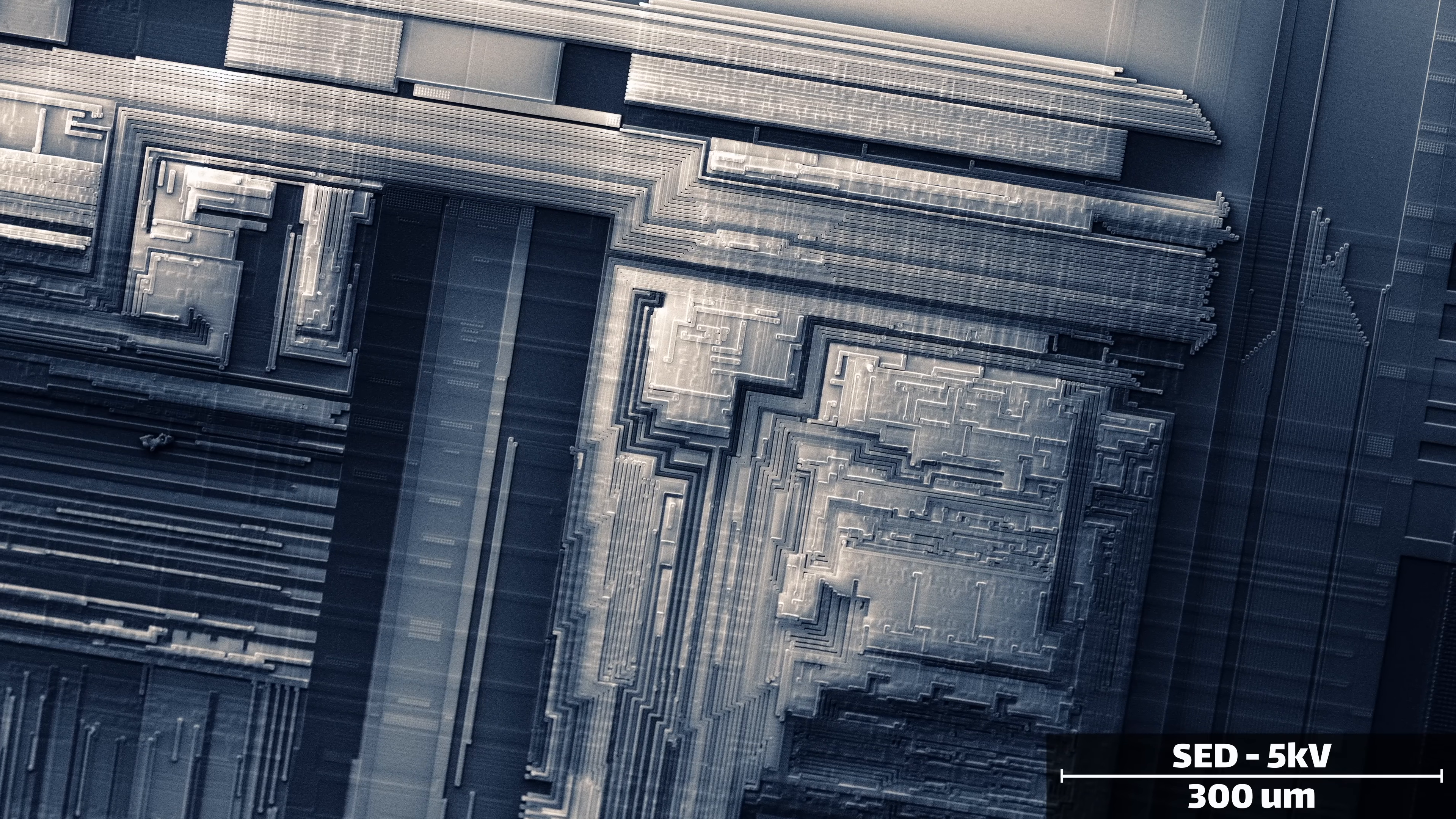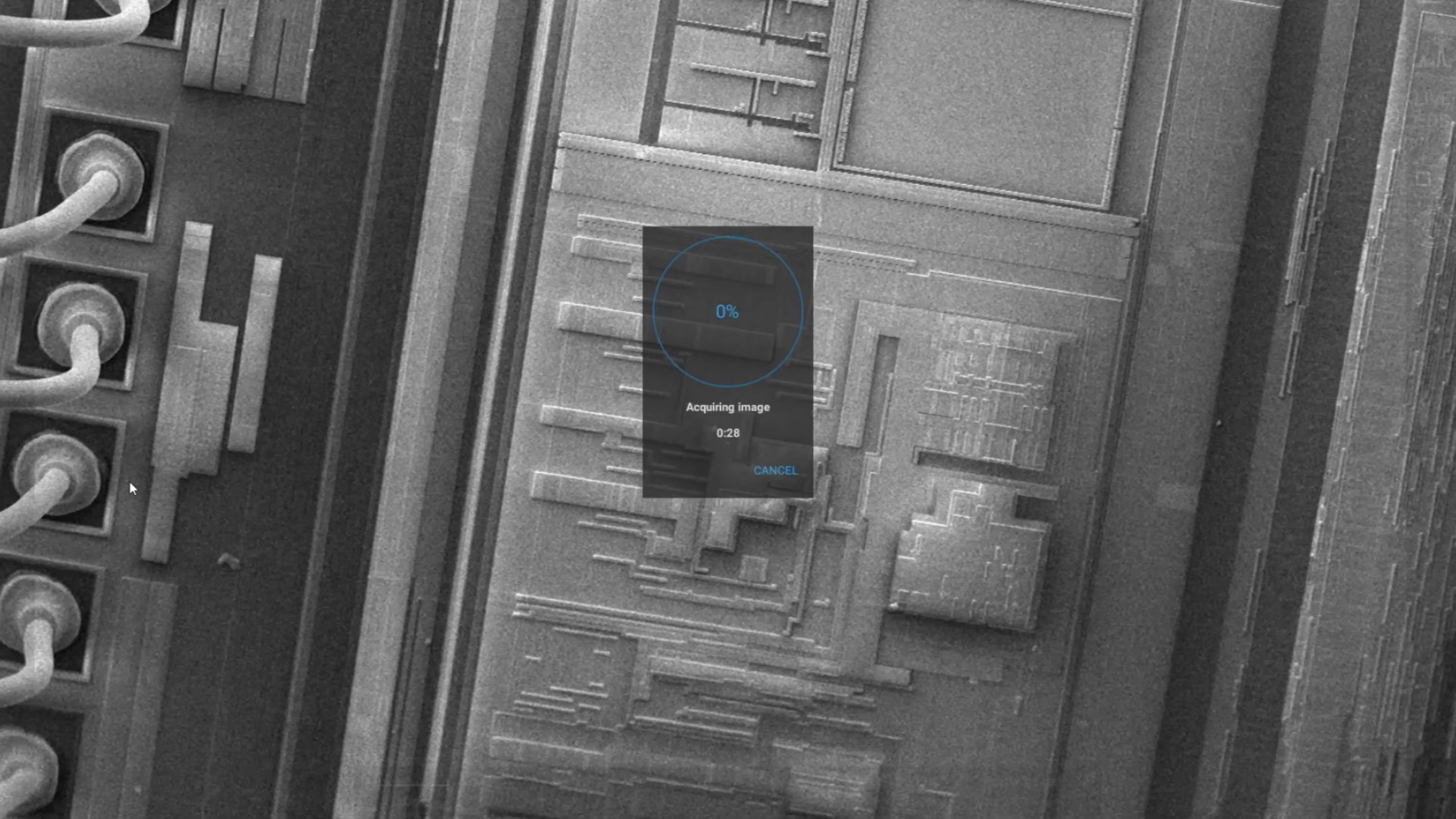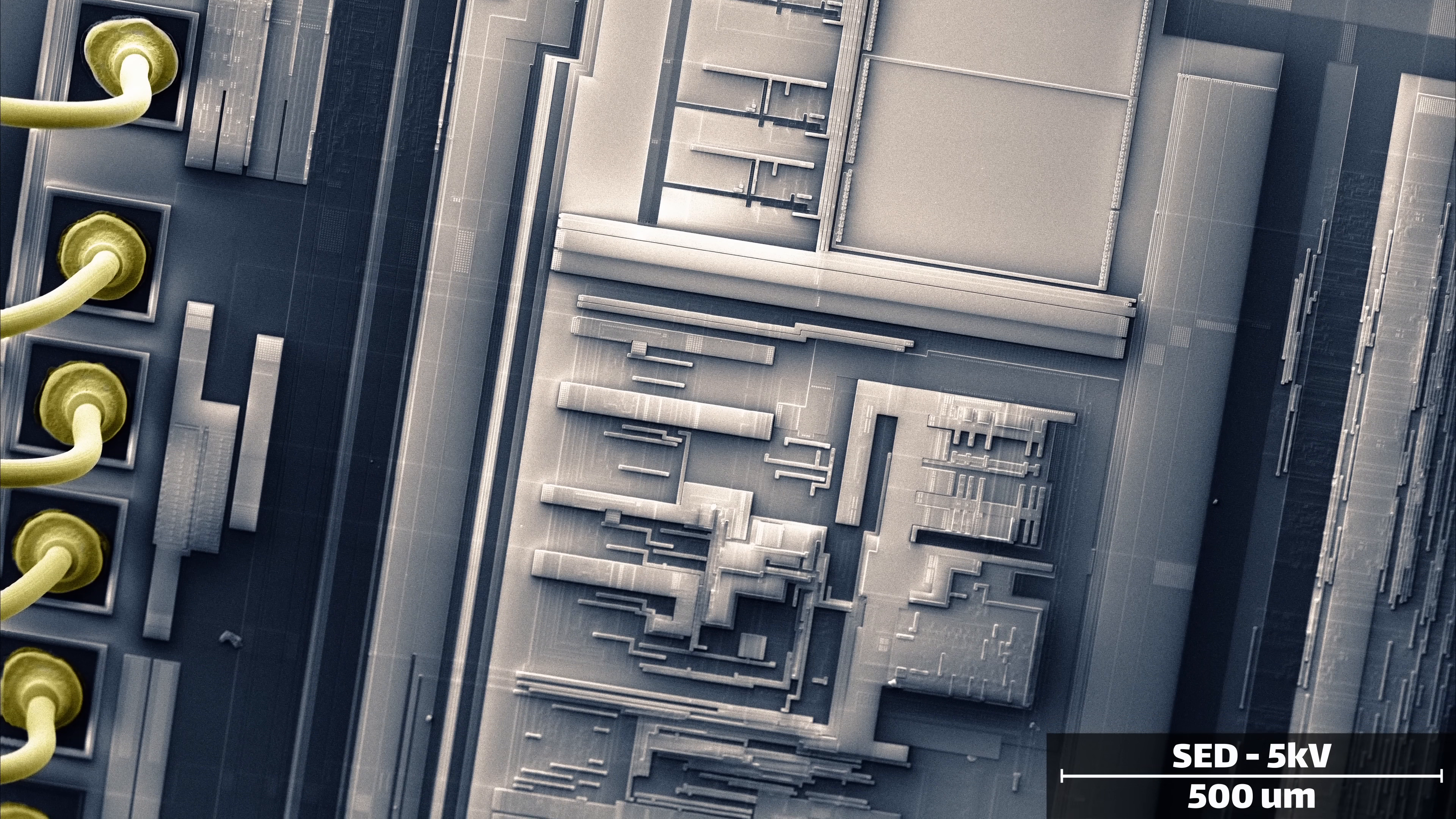Modern chips deal with this by polishing the surface periodically throughout the fabrication process. But older chips did not require this as much, as they're a lot less complicated.